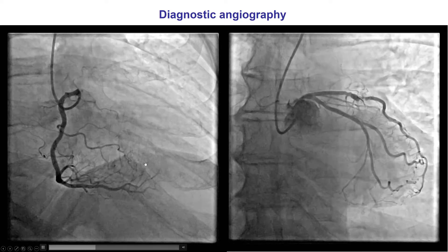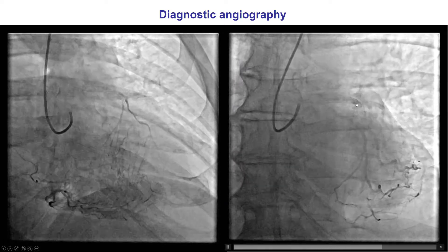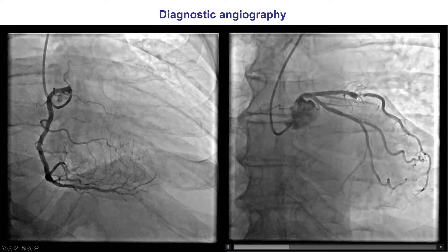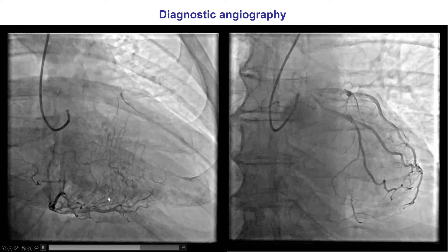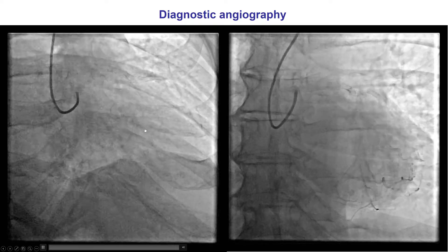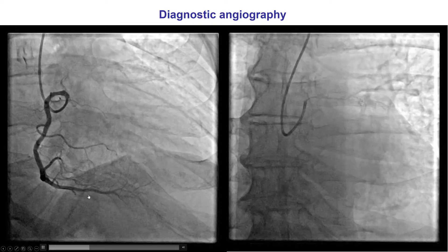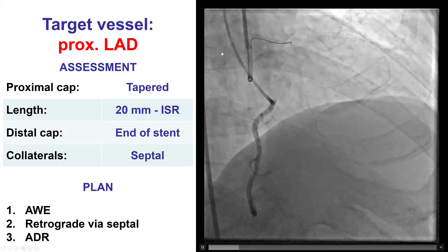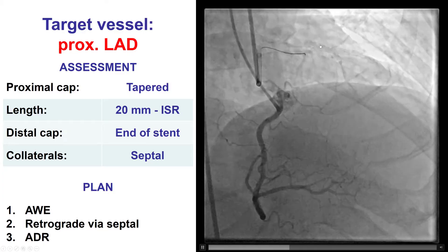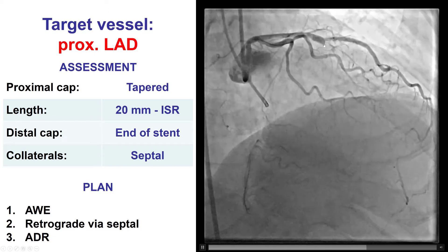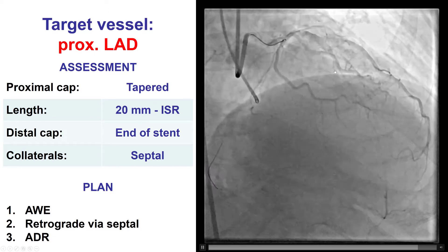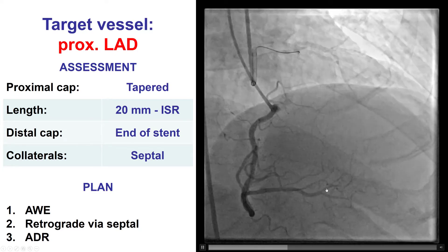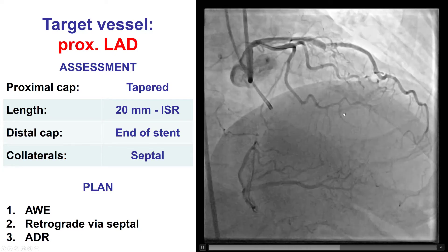Diagnostic angiography demonstrated occlusion of the mid-LAD right after the takeoff of a very large diagonal branch that had a stent. There was retrograde filling of the LAD via septal collaterals from the distal right coronary artery. The CTO had a well-defined proximal cap, a short length of about 20 mm, a good quality distal vessel, and septal collaterals from the right coronary artery.